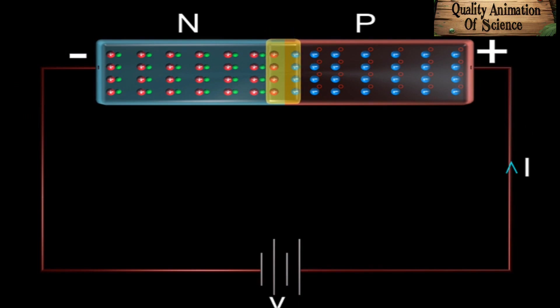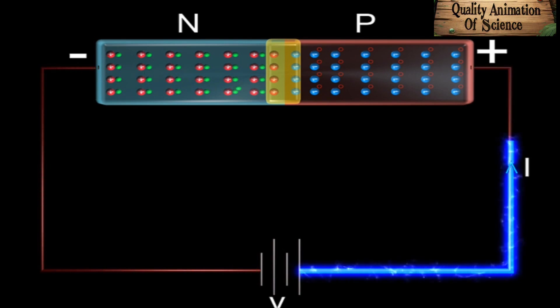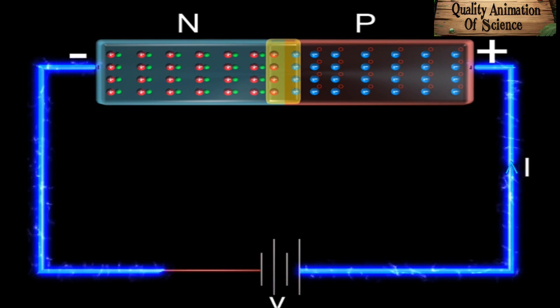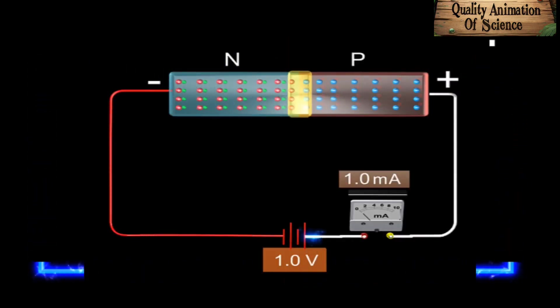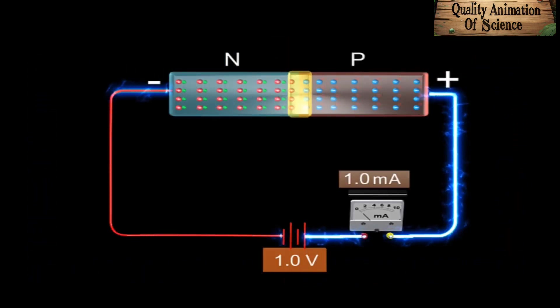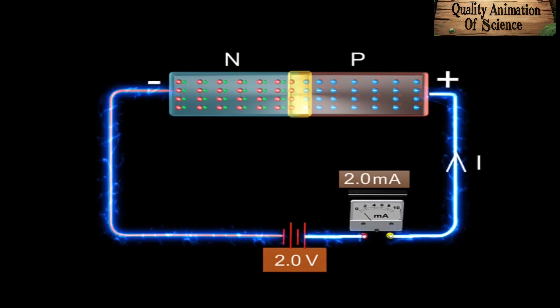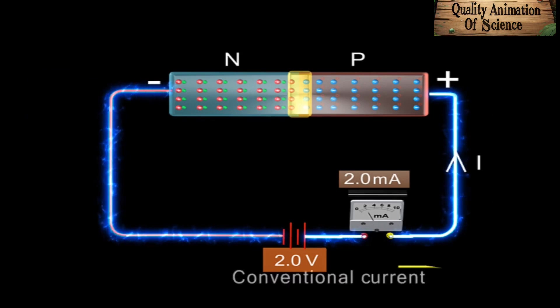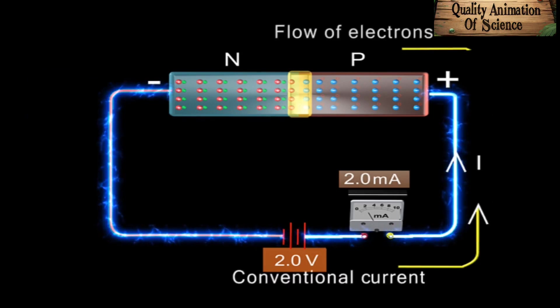Therefore, under the influence of the applied voltage, the electrons move from N-side to P-side and finally reach the positive terminal of the battery to emerge from the negative terminal and continue their circulation. Thus, a current can be established in the circuit easily. If the voltage applied by the battery is increased, the current also increases. Current shown in the external circuit is the conventional current, which flows in the direction opposite to the flow of electrons.